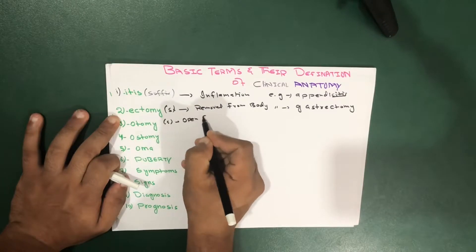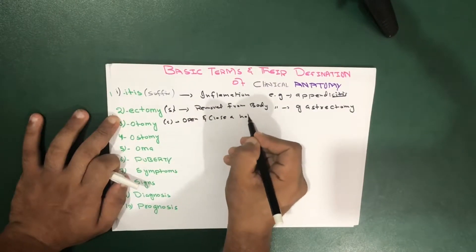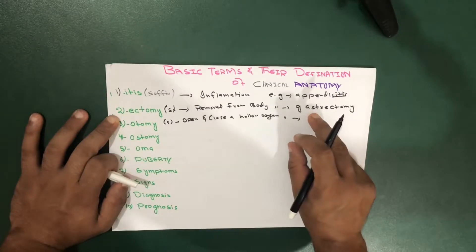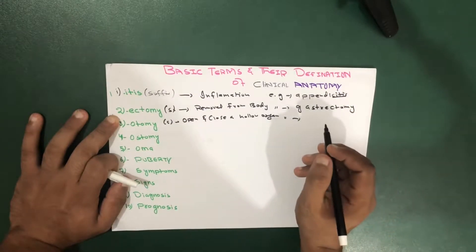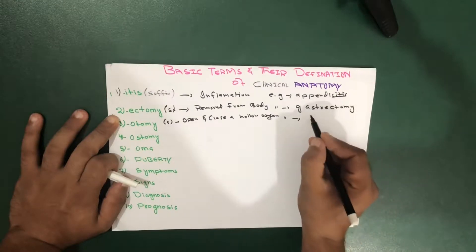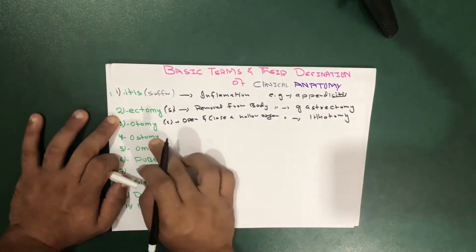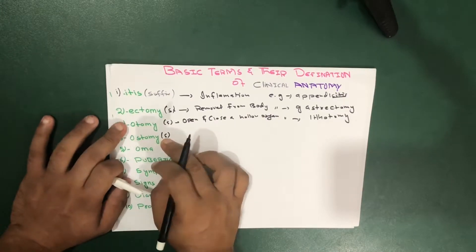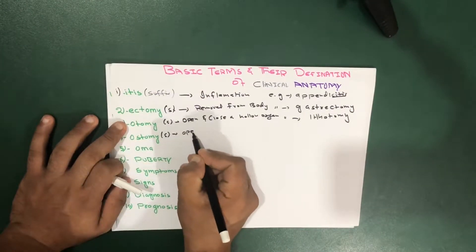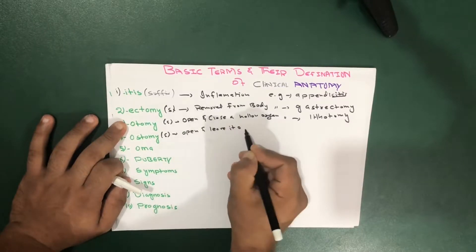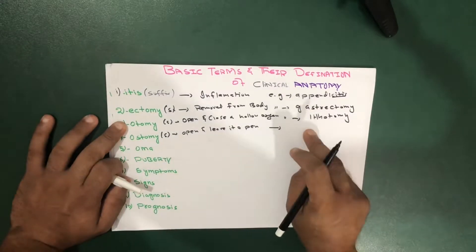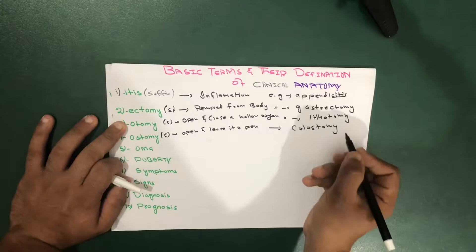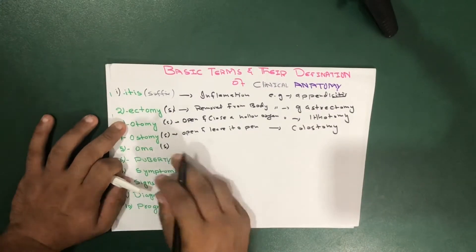For '-otomy' we have examples like lithotomy and other similar terms. Then we have '-ostomy', which means to open a hollow organ and leave it open — so you open a hollow organ and leave it open. An example of '-ostomy' is colostomy.